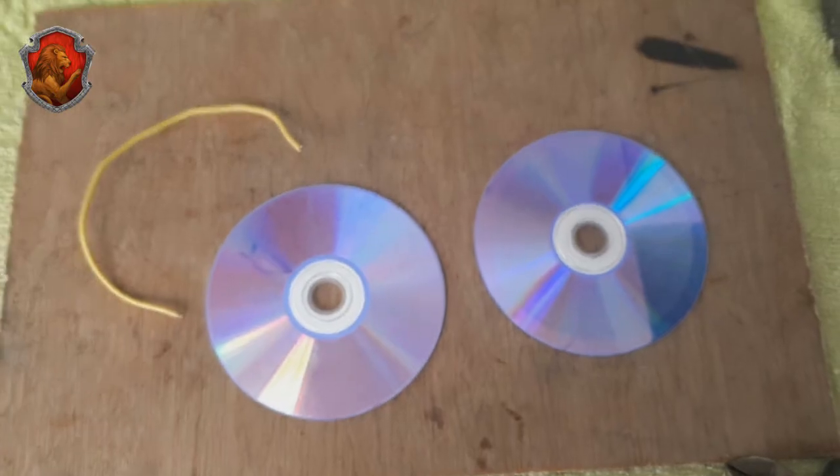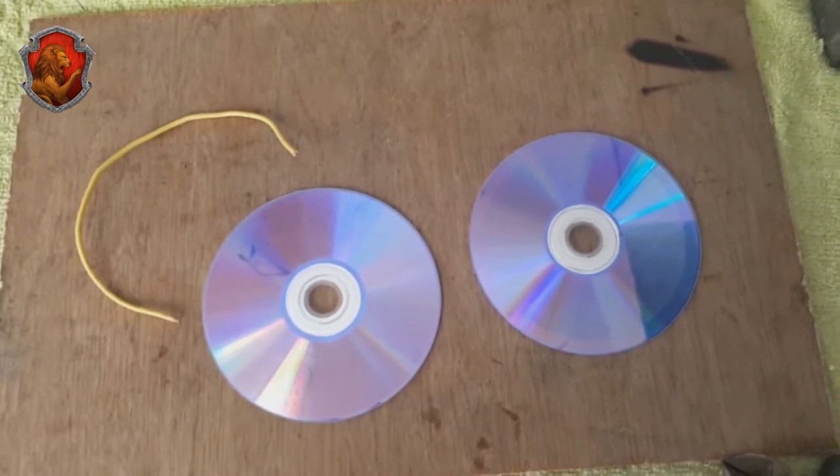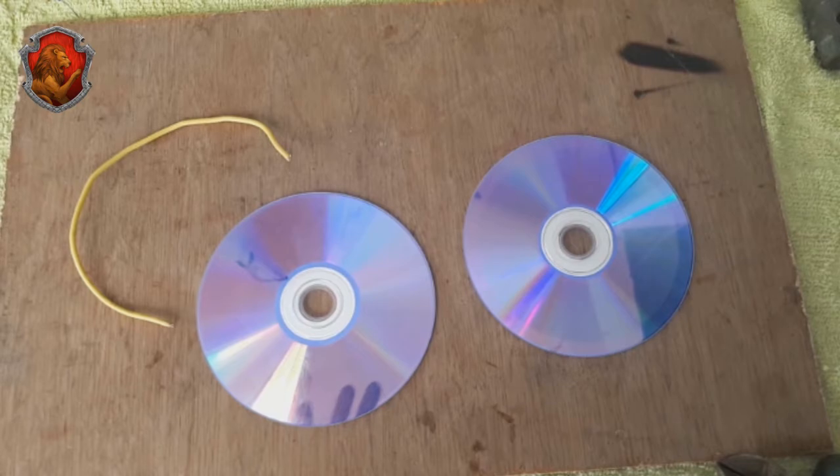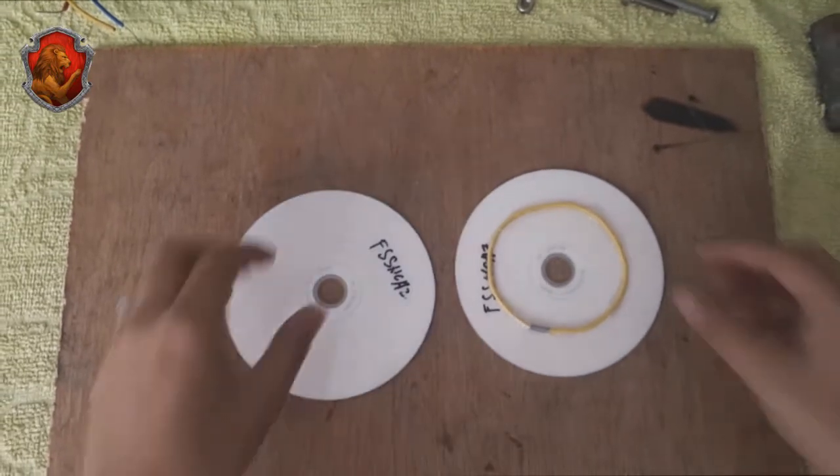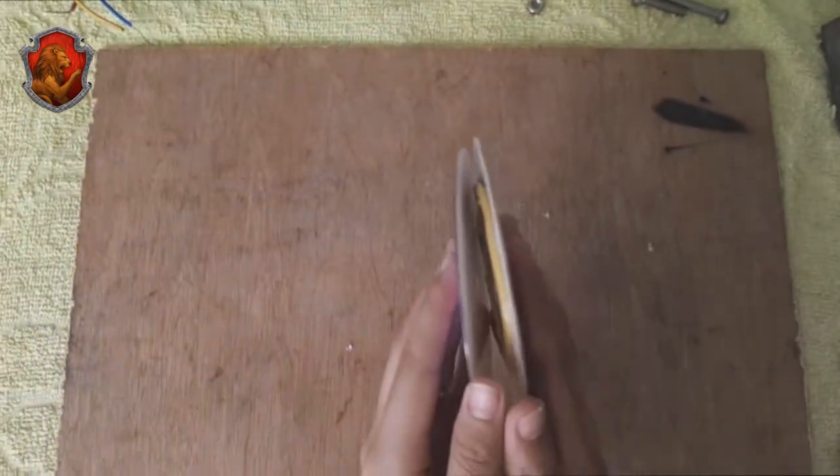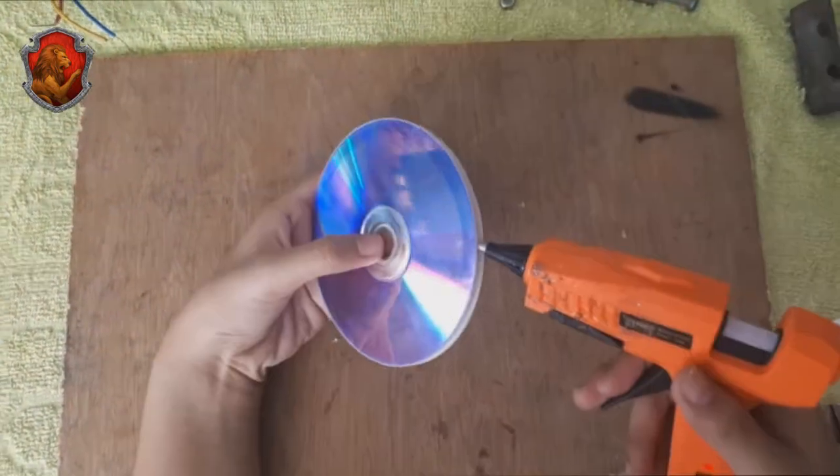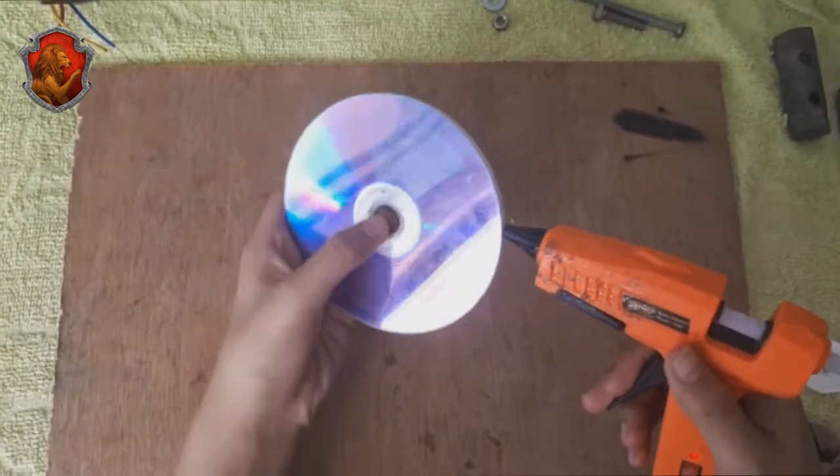Decide what source of energy you want to convert to electricity. In this case, we will use a CD wheel and a tubular metal as a wind-up mechanism. Using two compact discs and hot glue, make a rotary wheel for your generator. This serves as the source of energy that will be converted to electrical energy.